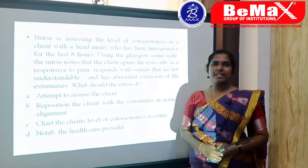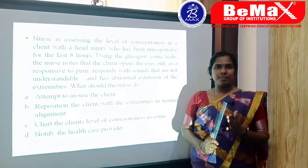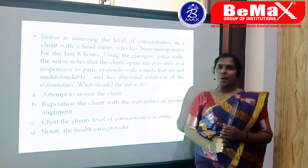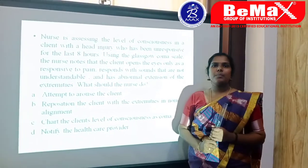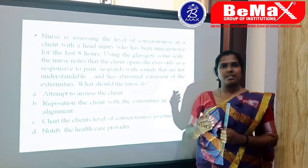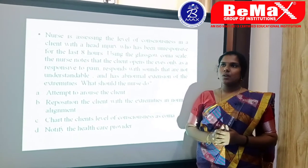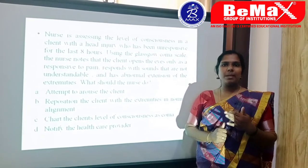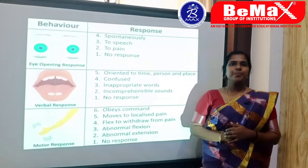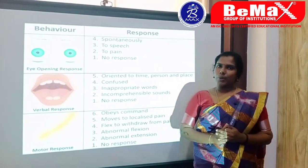The Glasgow Coma Scale is a very important neurological assessment tool for patients with a brain injury. It provides a real measurement of a person's level of consciousness after a brain injury. The GCS scale has three parameters: eye response, verbal response, and motor response.